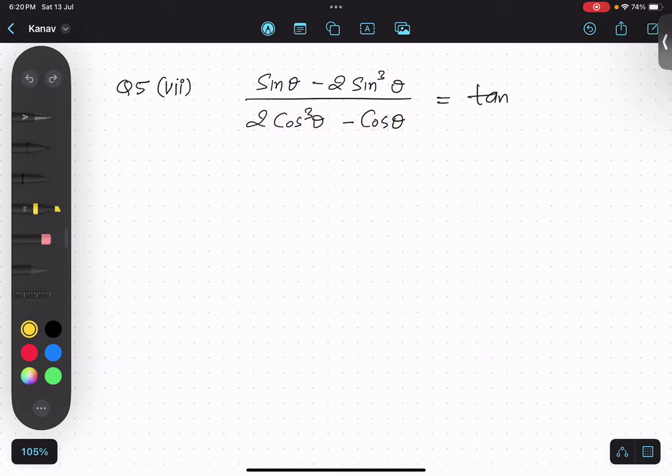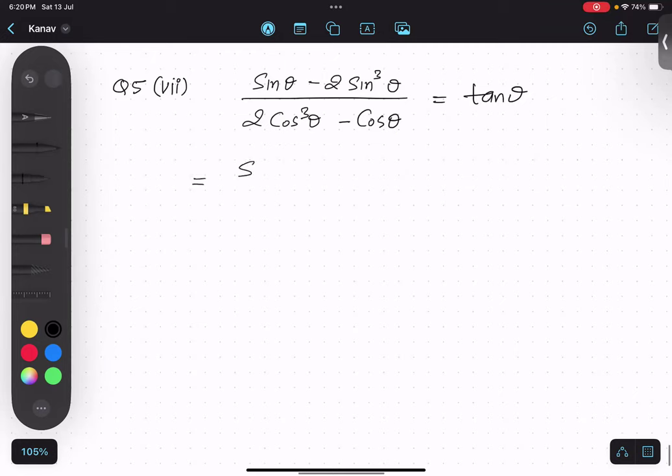And as soon as we see the same thing, what do we need to do? We will be taking common: sin theta common from the numerator and cos theta common from the denominator.